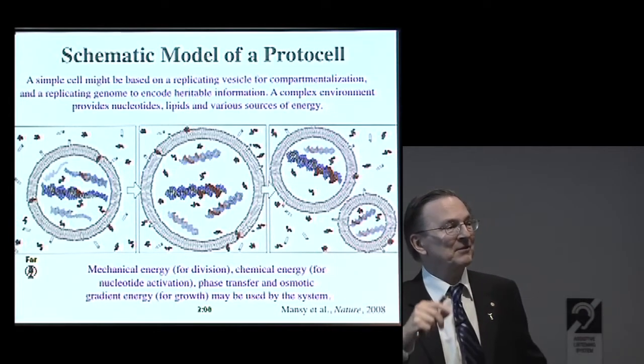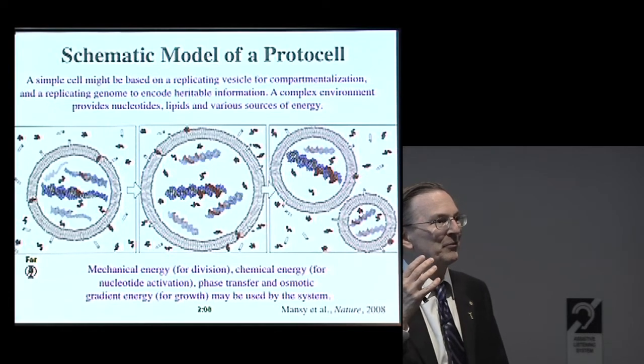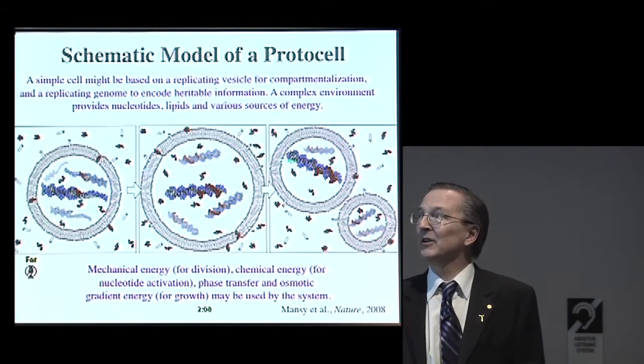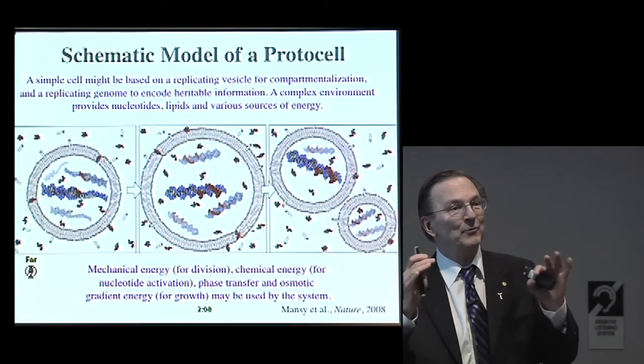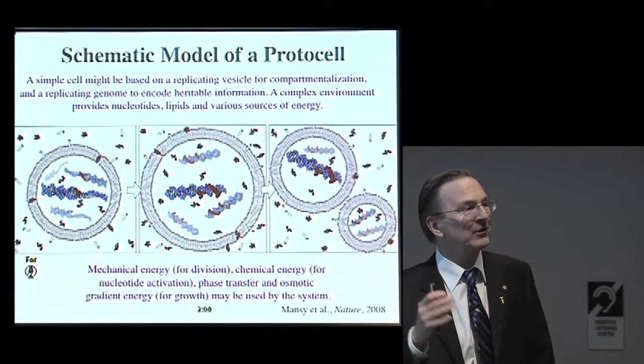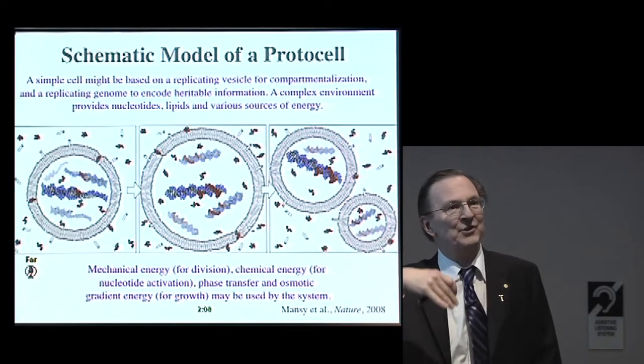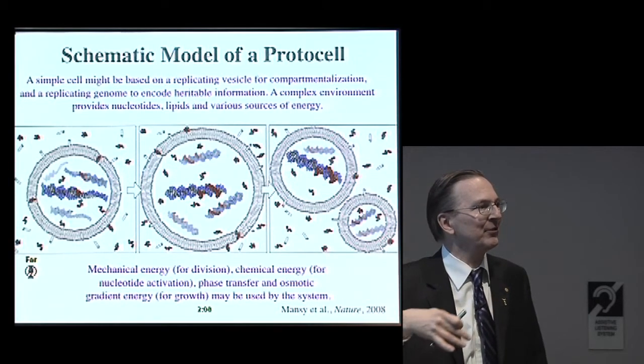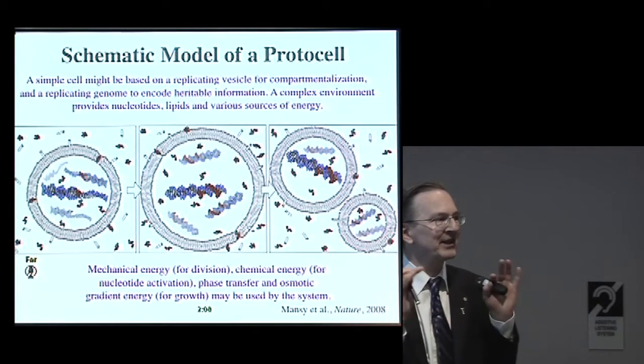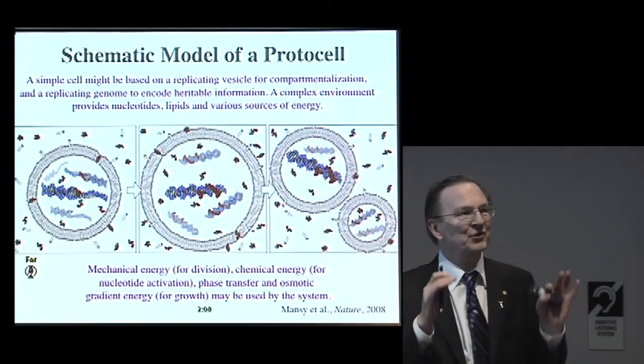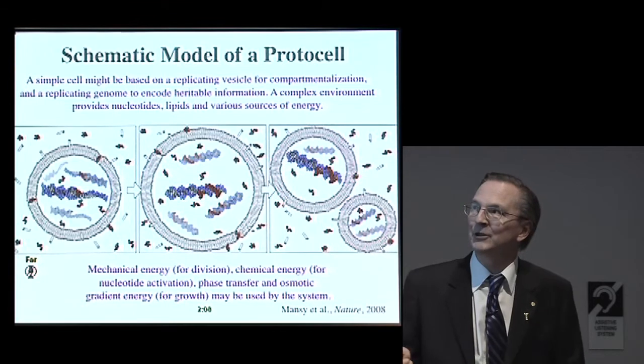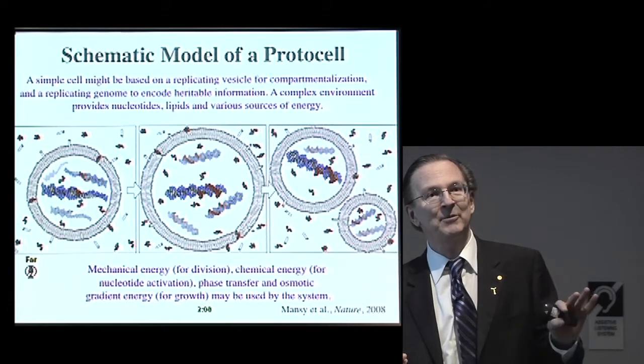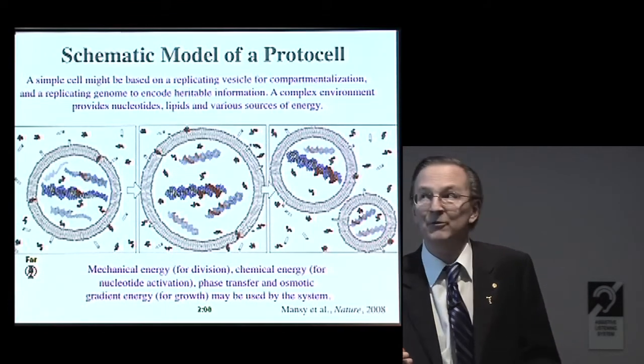Somewhere along the line, a sequence that actually could do something useful and enhance the replication or the survival of these primitive cells, somewhere a useful sequence would come along, would provide an advantage, and it would gradually increase in abundance in the population. That's the beginning of Darwinian evolution. The change in the genetic structure of a population is Darwinian evolution, and that's what we'd like to see happen spontaneously in a laboratory.